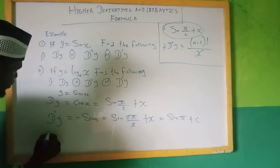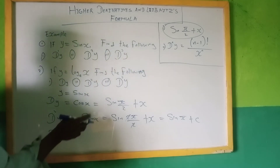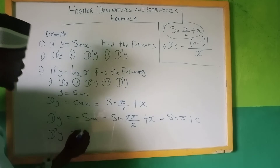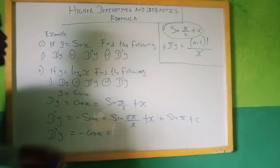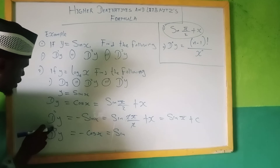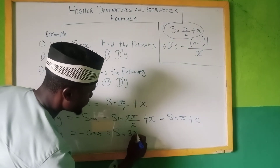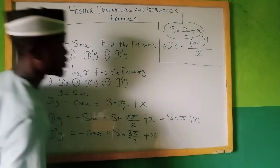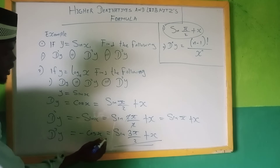For the third one, we have d³y. We will use the second result to differentiate the third one. Our derivative for minus sin x is now equal to minus cos x. Applying the learning formula with power 3, it is supposed to have 3π/2 + x. So this is our final answer using the learning formula: sin(3π/2 + x). And this is our normal derivative result.